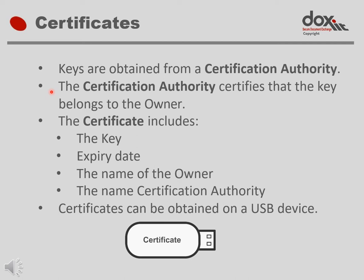After confirming the identity of the person, the certification authority issues a certificate. The certificate includes, among other things, an encryption key, an expiry date for the key, the name of the owner, and the name of the certification authority. This information is usually stored on a secure hardware device that looks similar to a USB memory stick.